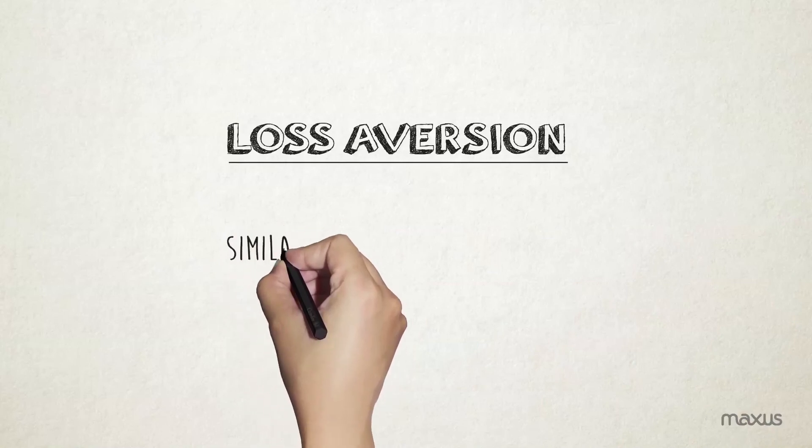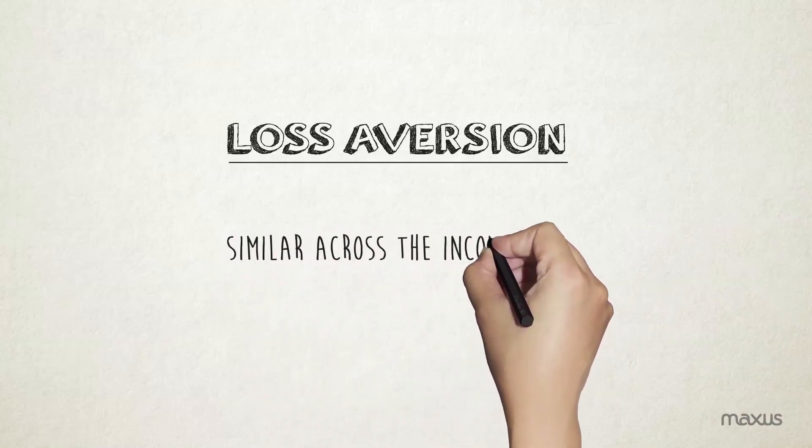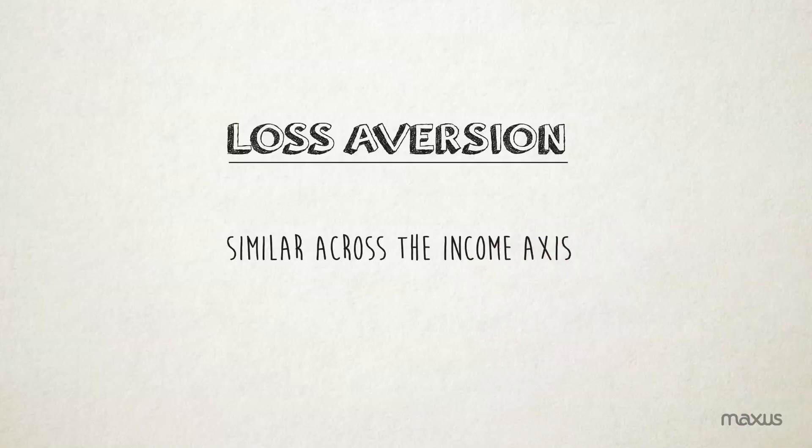The experiment also showed that while loss aversion was similar across the income axis, it was significantly different on the age axis. As age increases, probability that an individual is loss averse decreases.